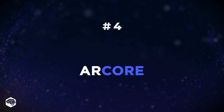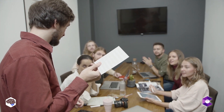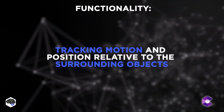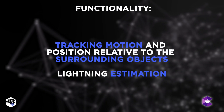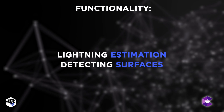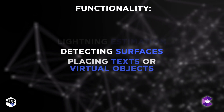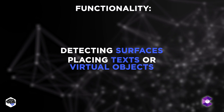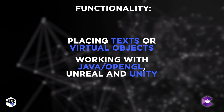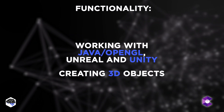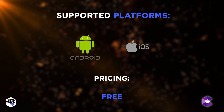ARCore. ARCore is, basically, Google's response to Apple's ARKit. Unlike Apple, Google doesn't mind supporting developing AR apps for both Android and iOS. Using this SDK allows tracking the phone's motion and its position relative to the surrounding objects, estimating the light to adjust it on the virtual objects, detecting surfaces and their size and location, placing texts or virtual objects in a certain spot and sharing them with other app users, and working with Java, OpenGL, Unreal, and Unity for creating 3D objects. Just as ARKit, this tool is free.